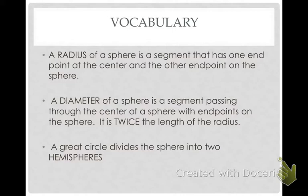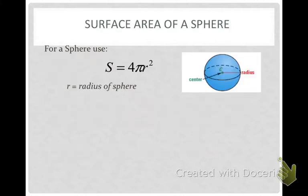And a great circle divides the sphere into two, what we call, hemispheres. So, half of a sphere.